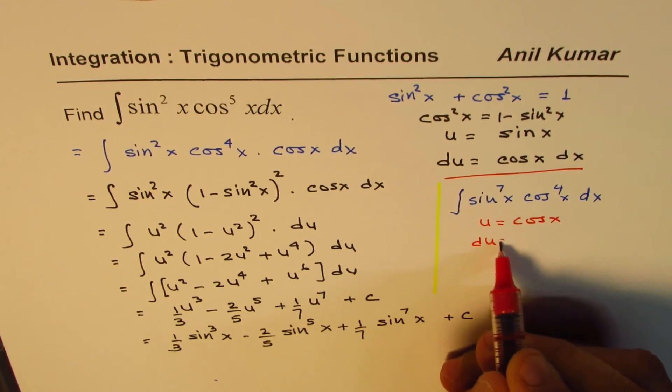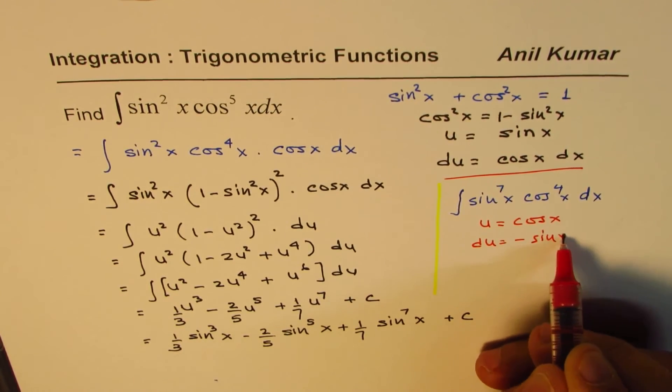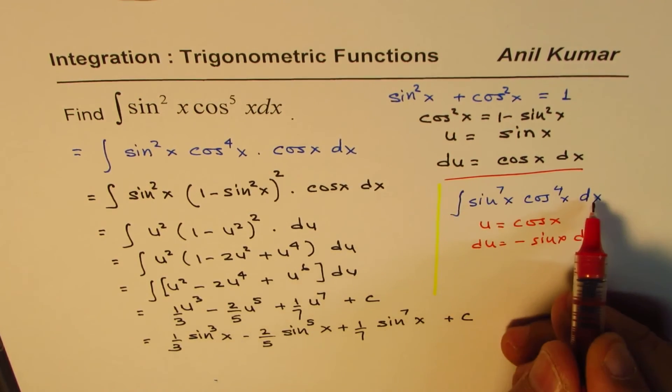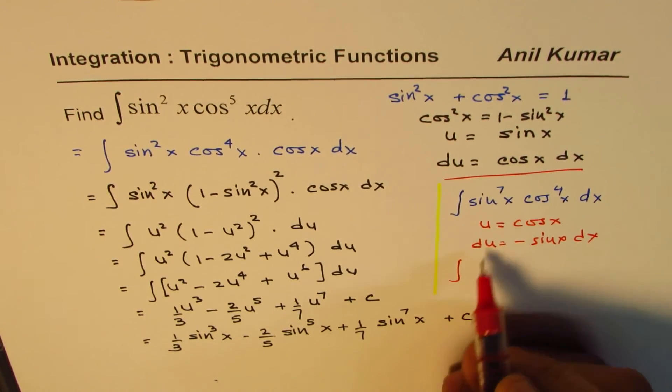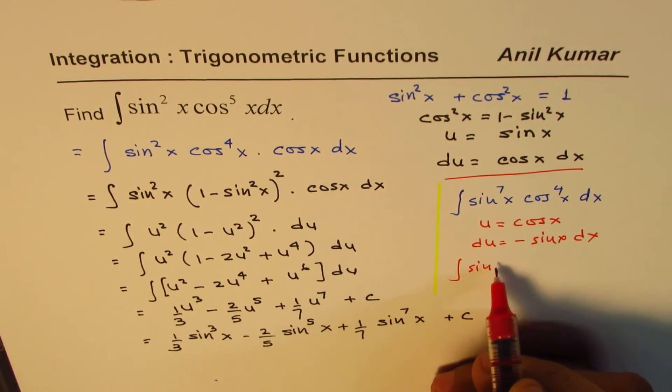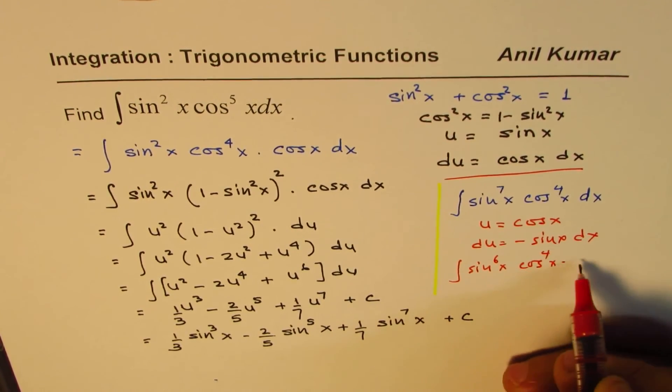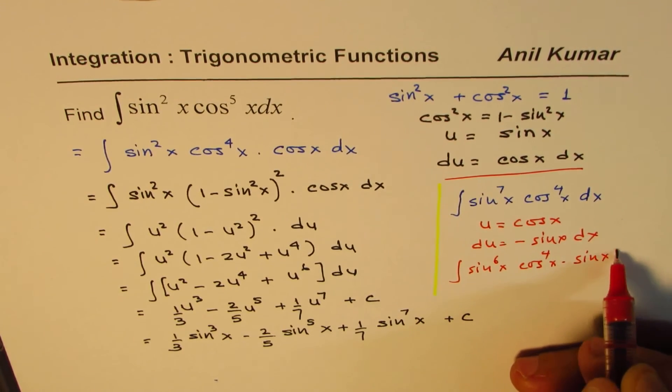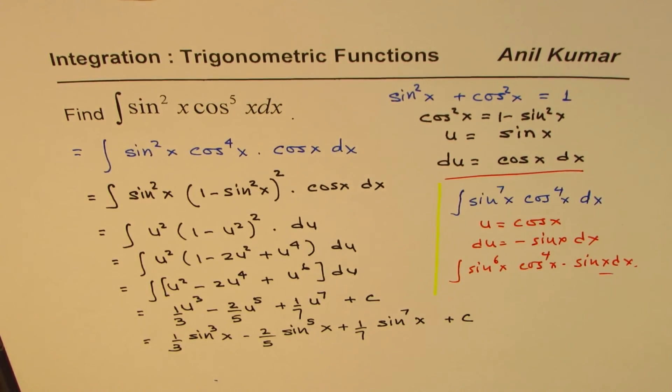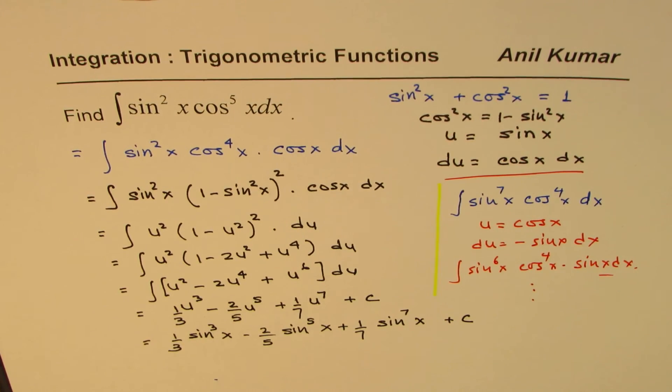So du will be equals to minus sine x dx, and if you keep one sine aside, you can easily do it. So you get sine to the power of 6x cos to the power of 4x times sine x dx. So that should help you to solve it further and find the solution.